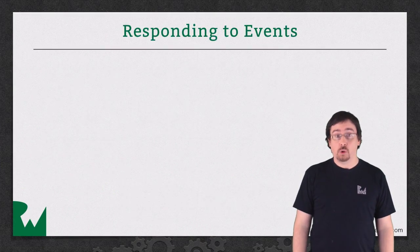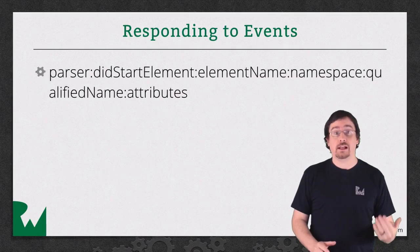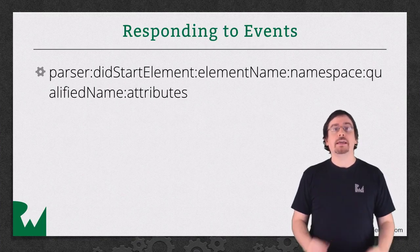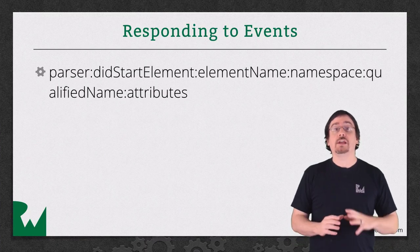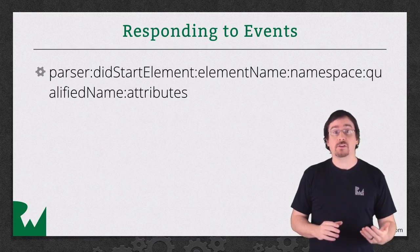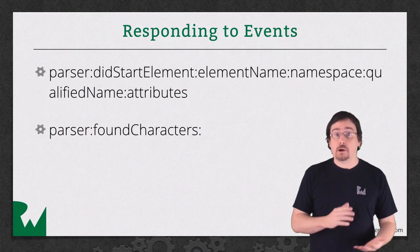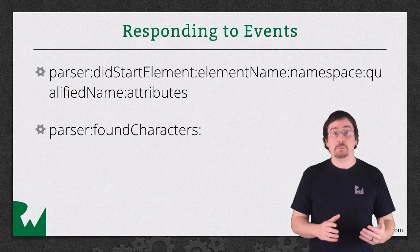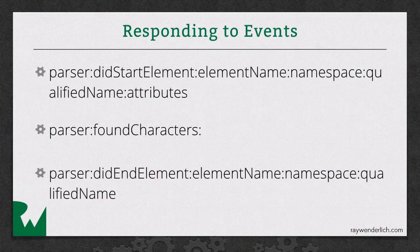The first event you will receive, or that you're interested in, is parser didStartElement. This will fire for the first video games element, and next for the video game element. Being that you're entering a new video game element, you'll need to create a new video game object. Once the parser starts parsing the name as elements, it will find characters, which fires the parser foundCharacters event. As the parser finds characters, you will save them to a temporary variable. When the parser finishes the name element, the parser didEndElement event will fire. At this point, you'll confirm that the parser just finished the name element and assign the temporary string to the actual name field. You will continue to do this until all your XML is parsed and your object is initialized.